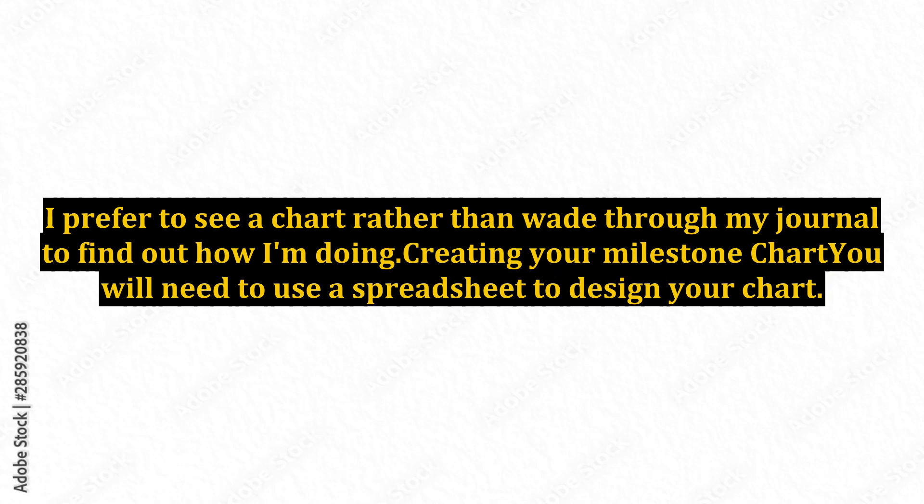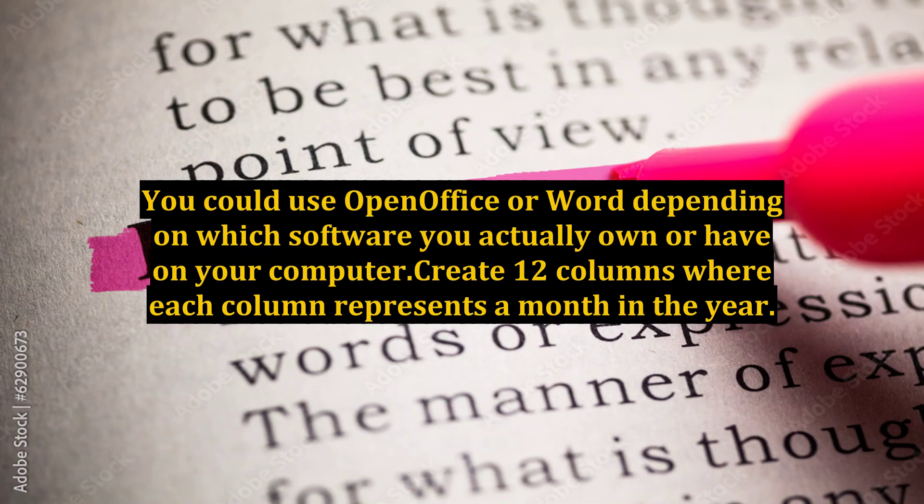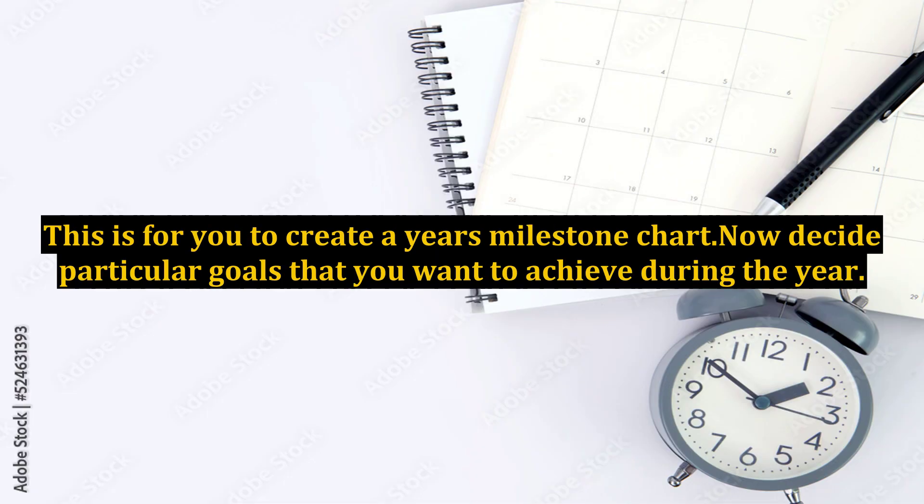I prefer to see a chart rather than wade through my journal to find out how I'm doing. You will need to use a spreadsheet to design your chart. You could use OpenOffice or Word depending on which software you actually own or have on your computer. Create 12 columns where each column represents a month in the year, to create a year's milestone chart. Now decide particular goals that you want to achieve during the year.